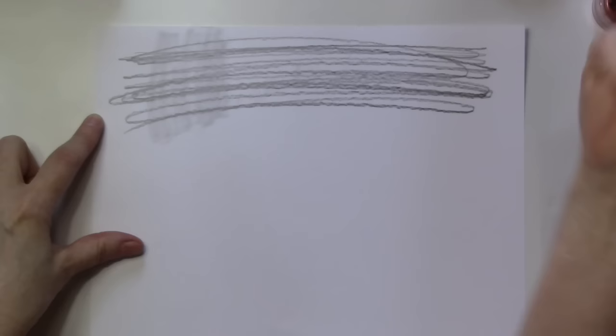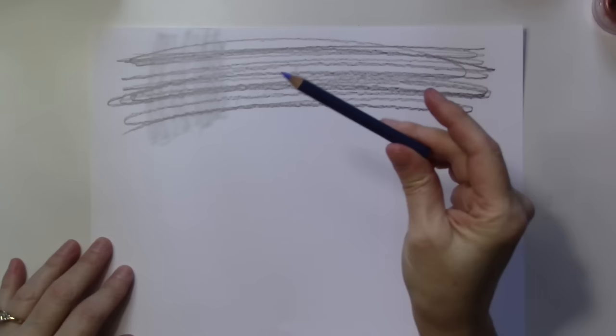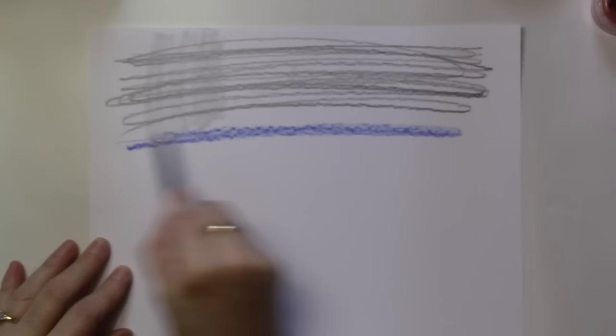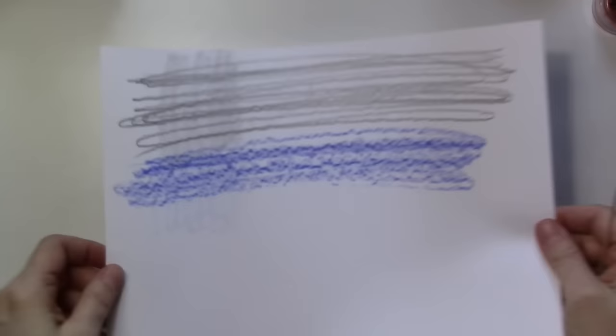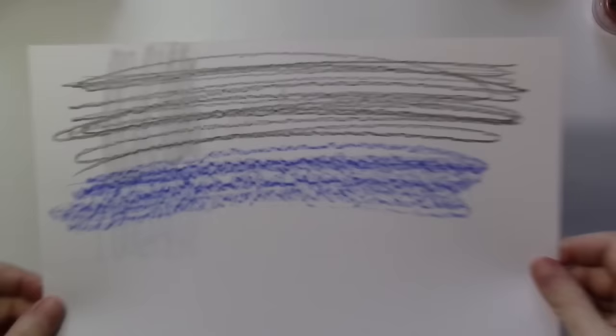Now let's do this, a Prismacolor Premier colored pencil. The color is ultramarine. Prismacolor pencils are very waxy. And as you can see, it doesn't take much to smudge it as well.